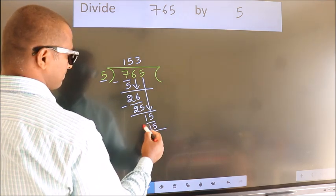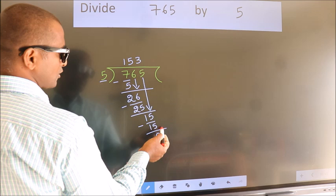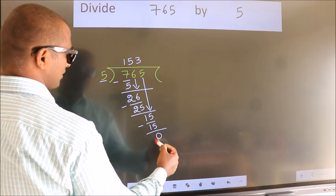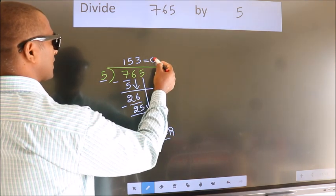Now, we subtract. We get 0. No more numbers to bring down. So, we stop here. This is our remainder. This is our quotient.